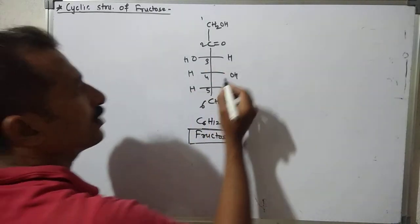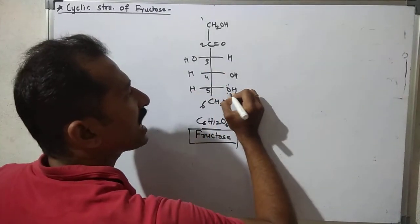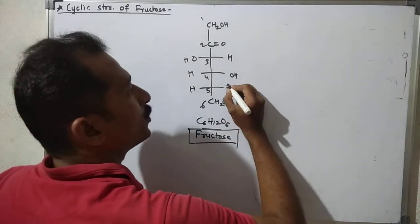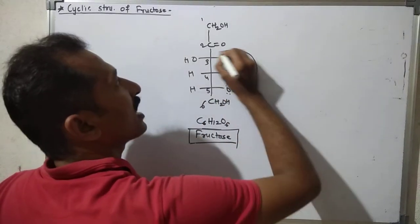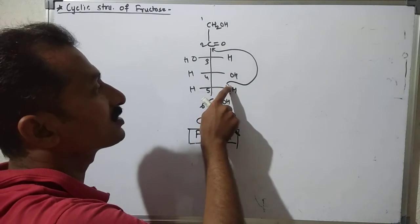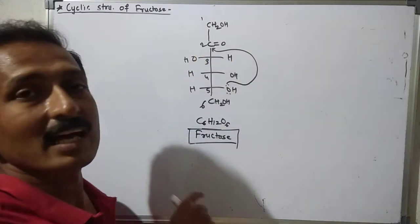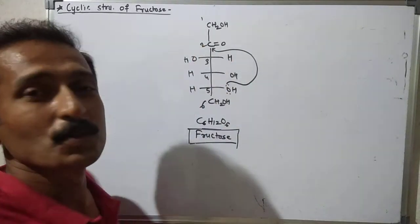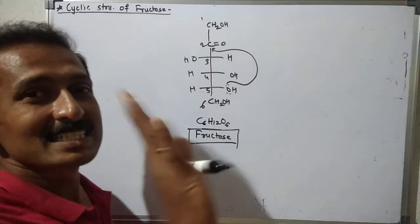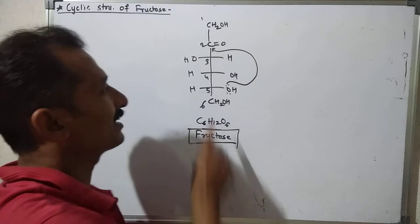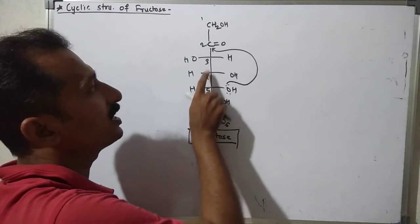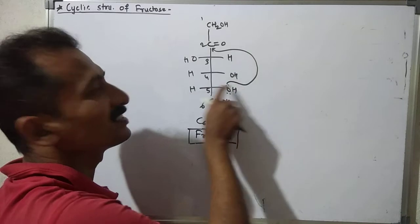Fructose has a keto (C=O) group. In forming the cyclic structure, the oxygen on carbon 5 uses its lone pair to attack the carbonyl carbon (carbon 2). This creates a five-membered ring — four carbons and one oxygen — giving a five-membered ring.